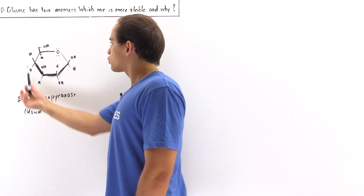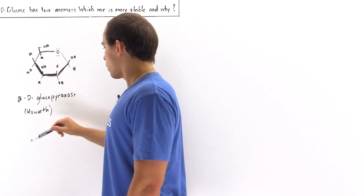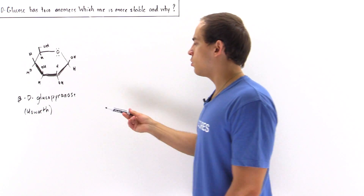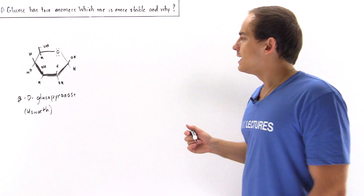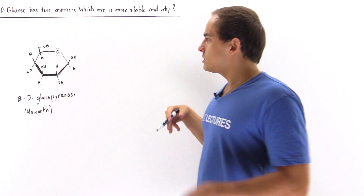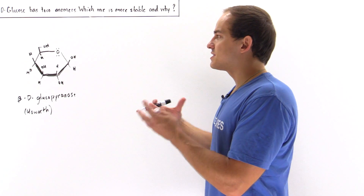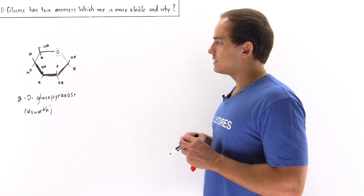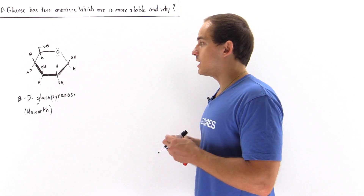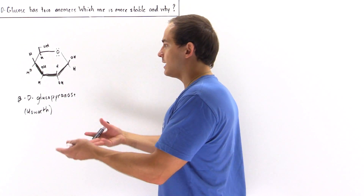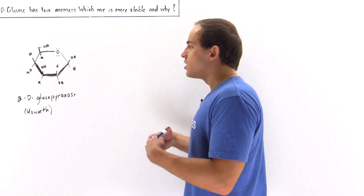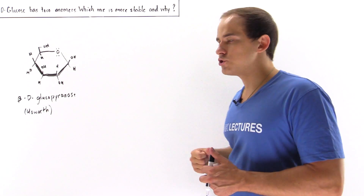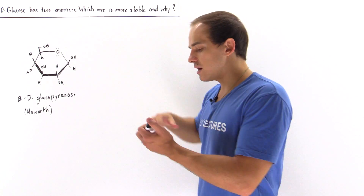This way of drawing the glucose molecule is called the Haworth form. To actually assess the stability of this molecule and compare the beta and alpha anomers, we need to draw the chair conformation.